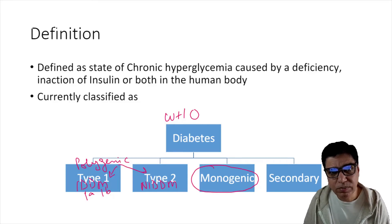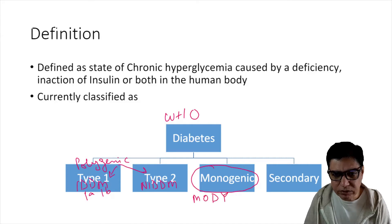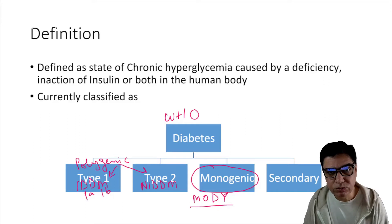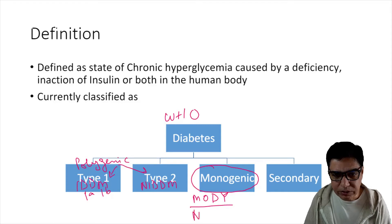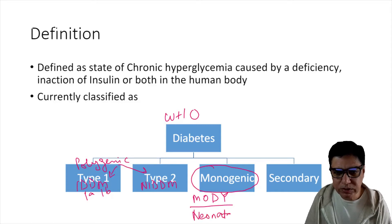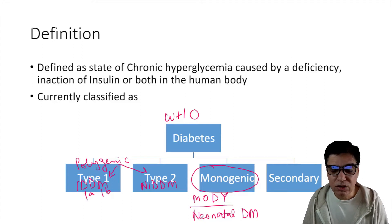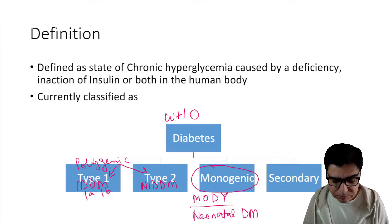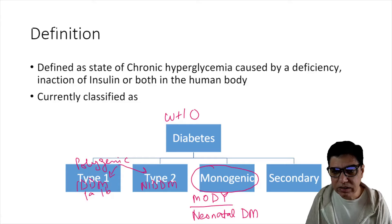Type 1 and Type 2 are polygenic — different genes along with environmental factors are responsible. Monogenic diabetes, on the other hand, is caused by a single gene problem, and includes maturity onset diabetes of the young, also known as MODY, and neonatal diabetes — diabetes occurring within the first six months of life, of which 95-96% of cases are monogenic in nature.